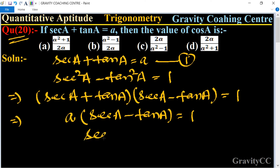So sec A - tan A = 1/a. This is equation (ii). We will now add equation (i) and equation (ii).